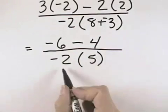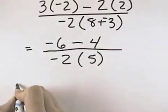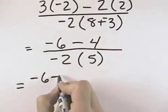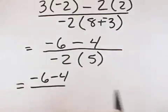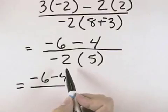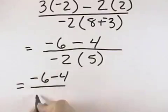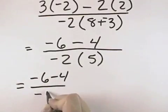In the denominator, we have negative 2 times 5. So if we leave the numerator, negative 6 minus 4, but start working in the denominator, continuing our multiplication, negative times a positive is negative. 2 times 5 is 10.